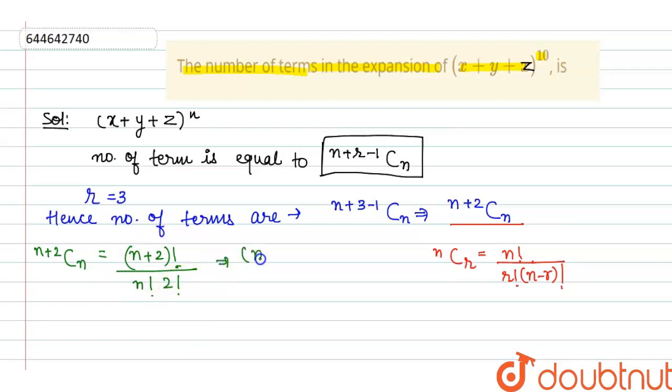So, here I can write it, n plus 2 means next term will be n plus 2, next term n plus 1 and next term n factorial. In the denominator part, factorial n factorial 2, factorial n factorial n will be cancelled out.